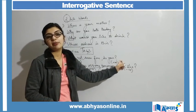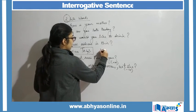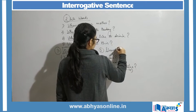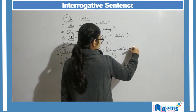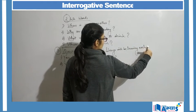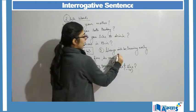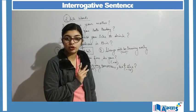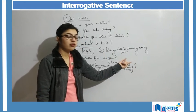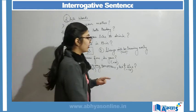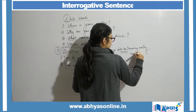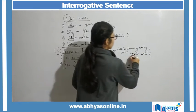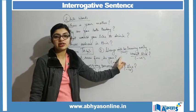A third example: 'Shreya will be leaving early, won't she?' Here 'will be' is my positive form of the sentence because there is no negative word. Since I have one positive, the next part will be negative, so I say 'won't she.' 'Won't she' is negative. Again, I have the combination of positive and negative.